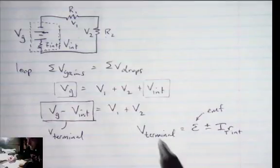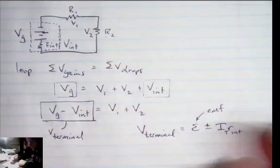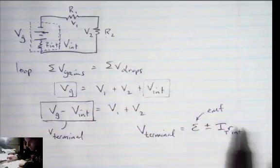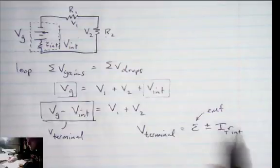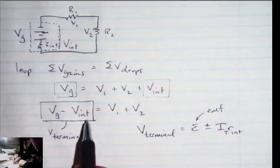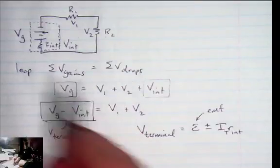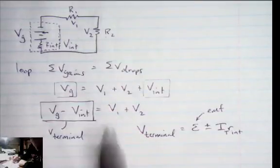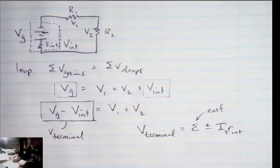We'll look at an example now that shows us where the plus comes from. It's going to happen right out of the loop rule. You don't have to worry about remembering this equation. You need to worry about remembering Kirchhoff's law, which is the loop rule, and you apply that loop rule and you can discover all of the things you need to discover.